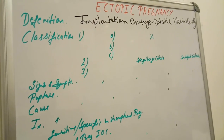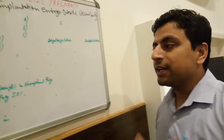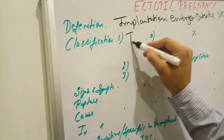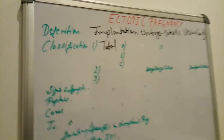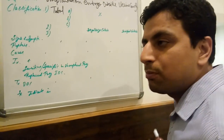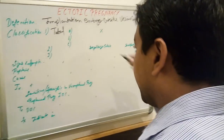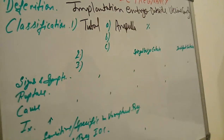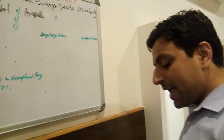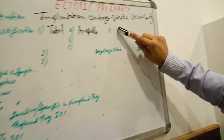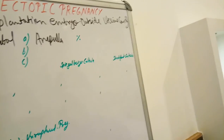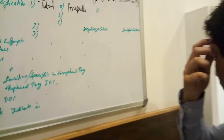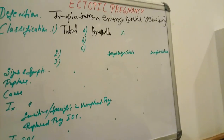Now I am going to explain what outside means — there is a classification. The first one is tubal. The most common site of ectopic pregnancy is tubal pregnancy, meaning the fallopian tube. And specifically, the ampulla is the most common site of ectopic pregnancy. Why ampulla? Because fertilization takes place here, plica is abundant here, and the ampulla is also the widest part of the fallopian tube.